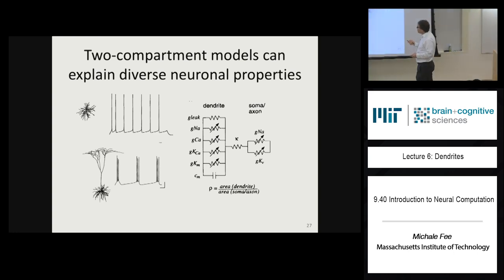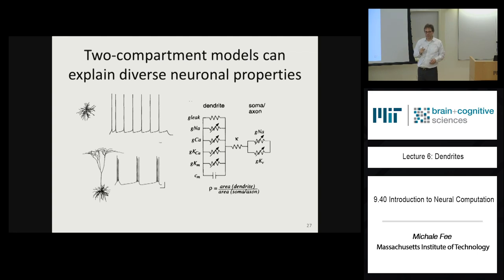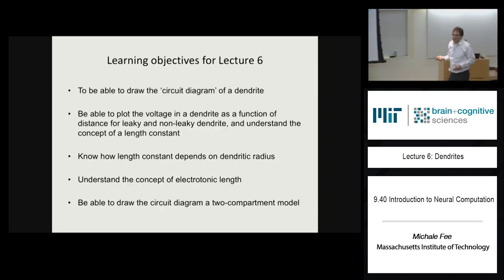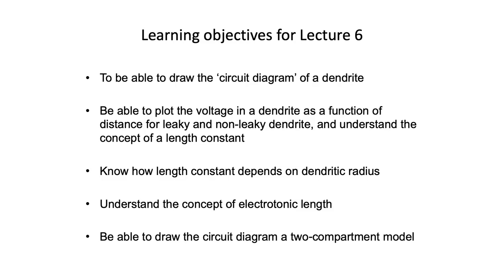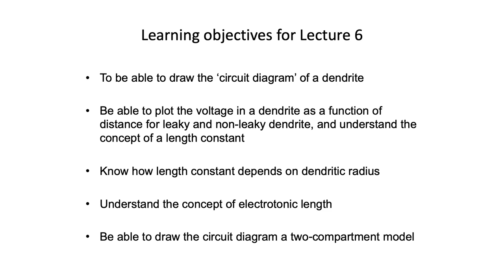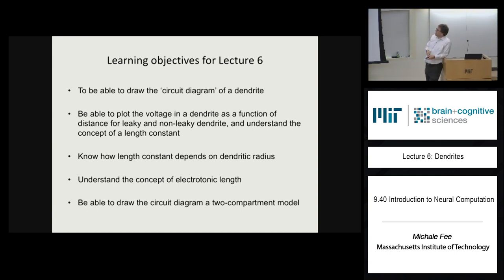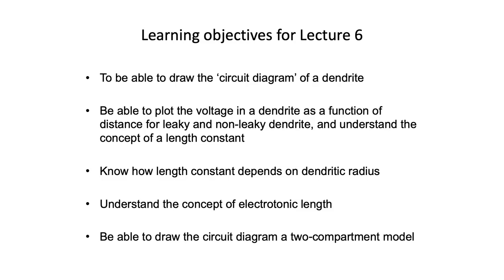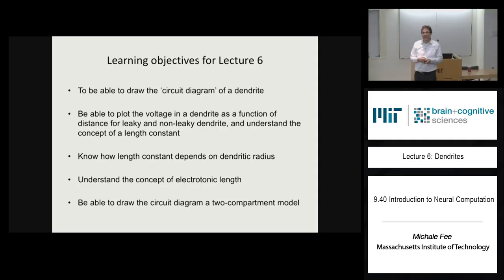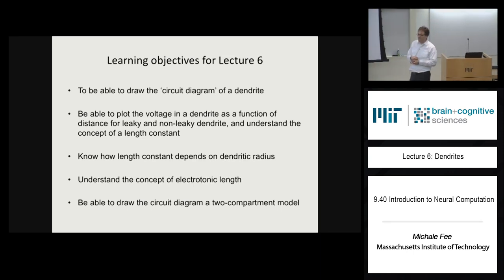Next time on Thursday, we're going to extend a model like this to include a syndrome model. As a summary: you should be able to draw a circuit diagram of a dendrite with finite element picture, plot the voltage as a function of distance in steady state for leaky and non-leaky dendrites, understand the length constant and how it depends on dendritic radius, understand electrotonic length, and draw the circuit diagram of a two-compartment model.